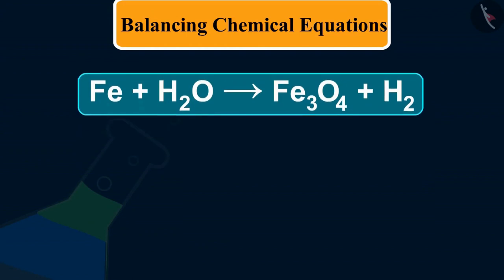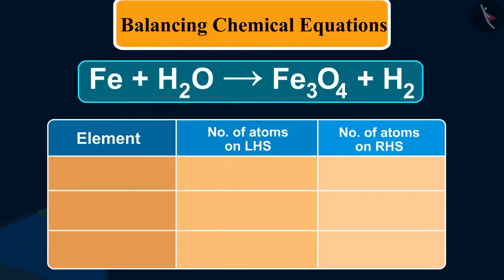Now, we can observe that the number of iron atoms on LHS is 1 and on RHS is 3. The number of hydrogen atoms on LHS are 2 and on RHS are also 2. And finally,